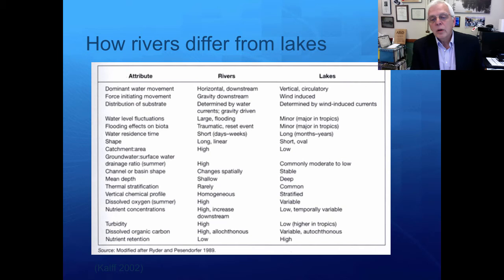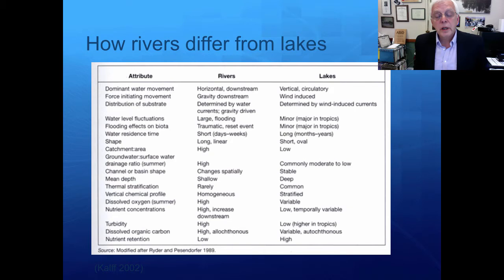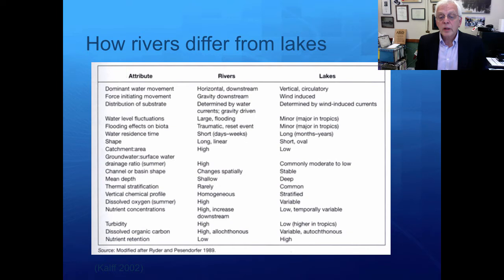Water level fluctuations are often large in rivers and streams and often minor in lakes, although can be large in the tropics. Flooding effects on the biota can be traumatic and completely reset ecology and succession, whereas in lakes they tend to be minor. The water residence time in streams is very short, usually measured in days and weeks — the average water residence time of streams on Earth is something like 32 days. The water residence time in lakes can be long, measured often in months or years.